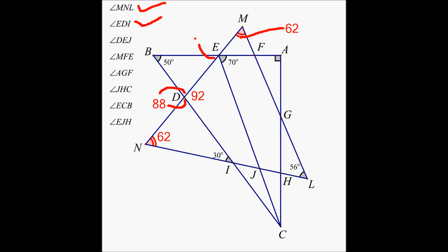Let's label it here. So angle BED is 42. Now take a look at this straight line BEA — this angle is a straight angle, 180 degrees.